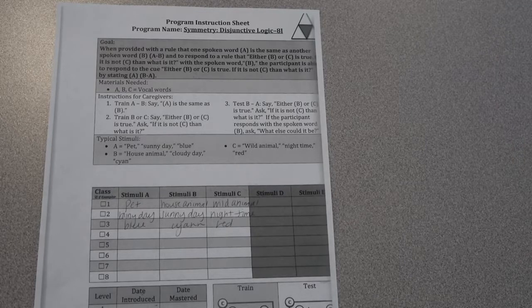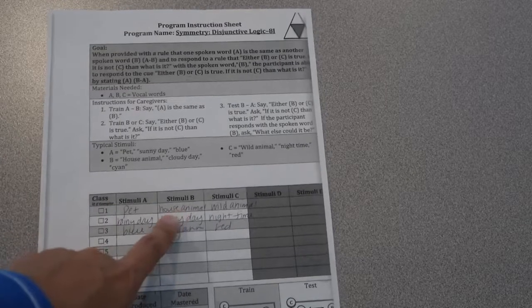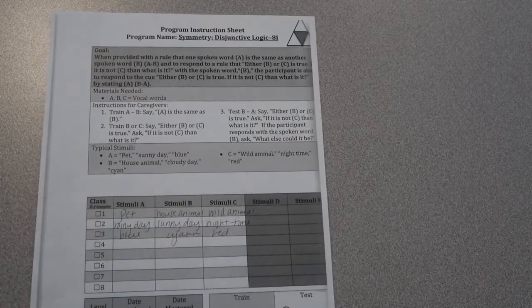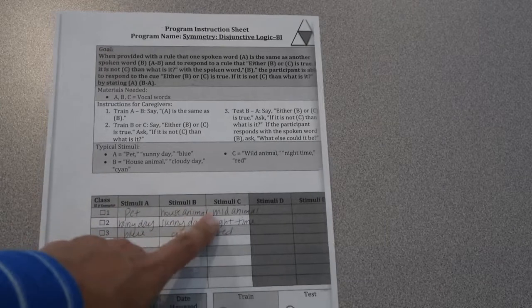For this one, you're going to have for your stimuli A, for example we have pet, rainy day, and blue, which would be equal to house, sunny day, or cyan. And then something that would be not the same would be wild animal, nighttime, and red.